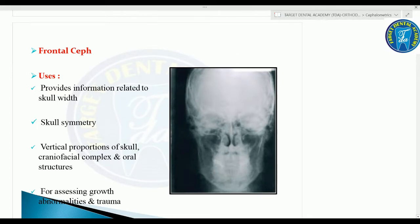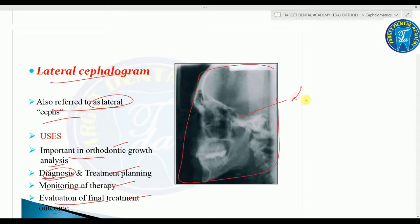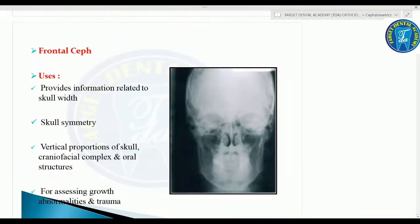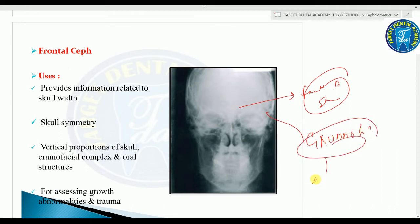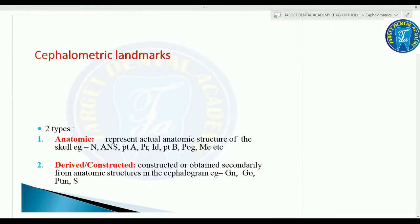The lateral cephalogram is important in orthodontic growth analysis for planning treatment, monitoring therapy, and evaluating the final treatment outcome. The frontal cephalogram is used to determine facial or skull asymmetry. Grumman's analysis is done on the frontal ceph, providing information related to skull width, skull symmetry, vertical proportion of the craniofacial complex, and oral structures for assessing growth abnormalities and trauma.